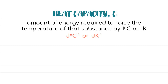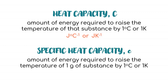The unit for heat capacity will be Joule per degree Celsius or Joule per Kelvin, depending on the information given in the questions. There is another variation used to calculate this more specifically, known as specific heat capacity, denoted by small letter c, which is the amount of energy required to raise the temperature of 1 gram of substance by 1 degree Celsius or 1 Kelvin. The final unit will be Joule per gram per degree Celsius or Joule per gram per Kelvin.